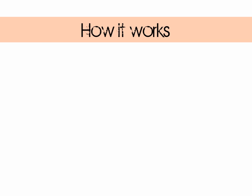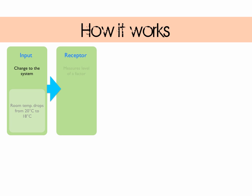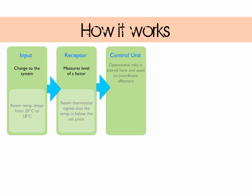We're going to explore a flow chart of how homeostasis works using an analogy of a central heating system. You can find this diagram in your textbook on page 195. The first step is a change to the system — the input. In our analogy, this is where the temperature of the room drops; we want the temperature to be at 20 but it's dropped to 18. The second step is the receptor, which measures the level — the thermostat detects the temperature drop and passes this information to the third step, the control unit, where it's decided what action needs to be taken. The control unit checks if the system is timed to be on, and if it is, it tells the boiler to warm things up and start pumping hot water to the radiators.